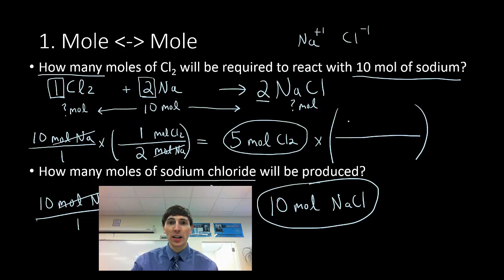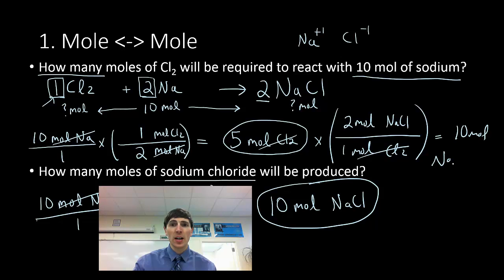Take that 5 moles of Cl2, and I could convert that to, well, there's 2 moles of NaCl for every, in my recipe here, it costs me 1 mole of Cl2. Now, this is a different way to solve the problem, but we're all talking about the same thing. I mean, that 5 moles of Cl came from the 10. So if I multiply that out, I get 10 moles of NaCl. There you go, same answer. So any way that you want to do that.